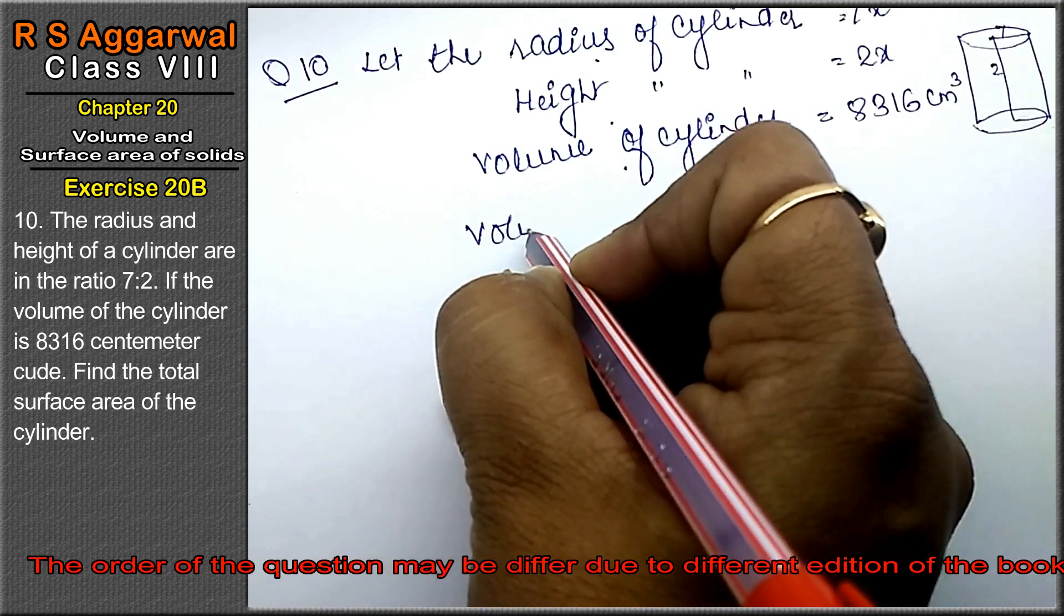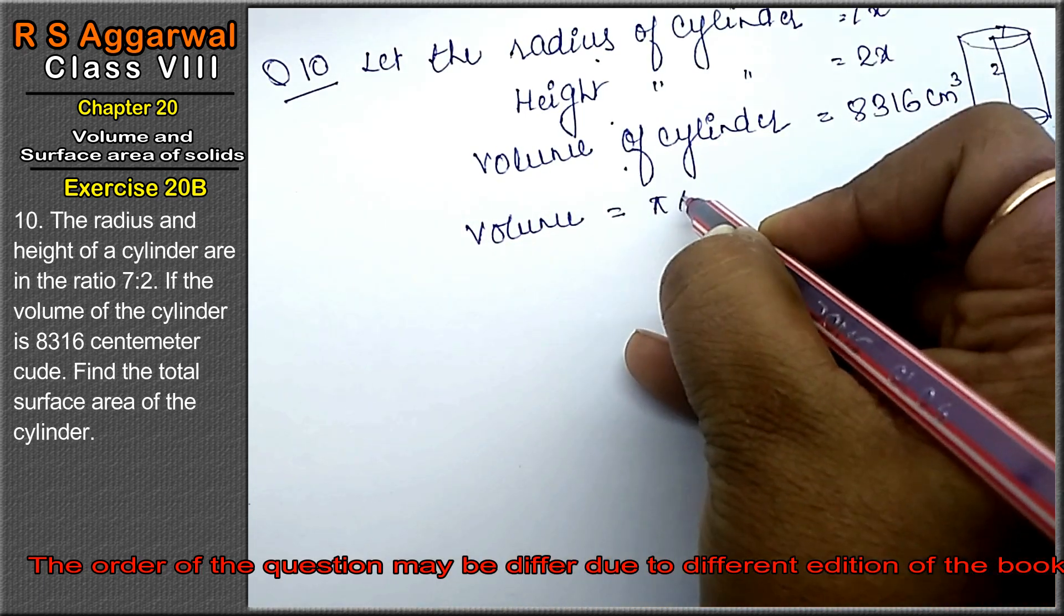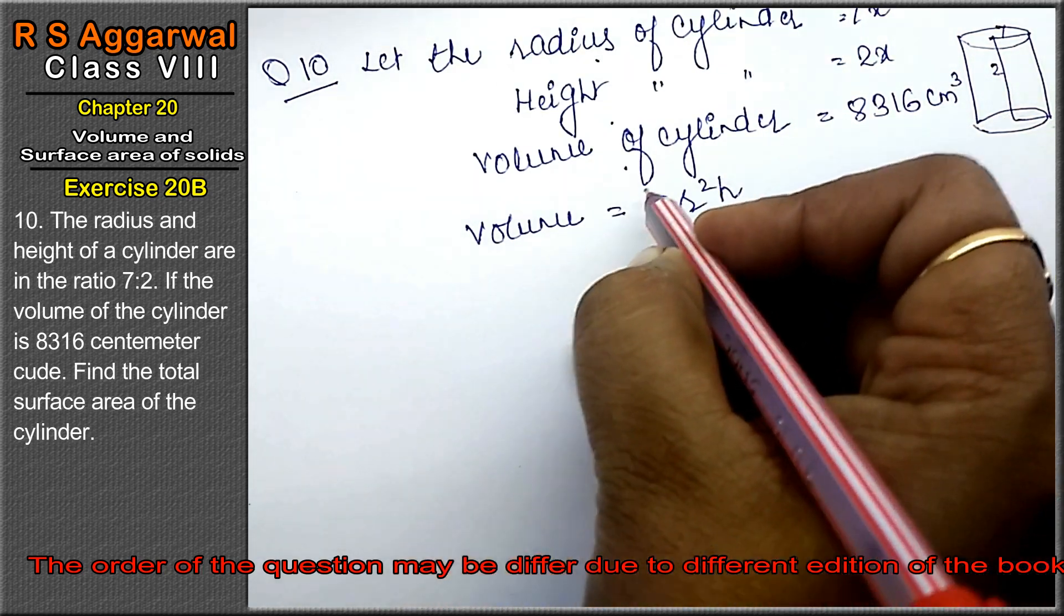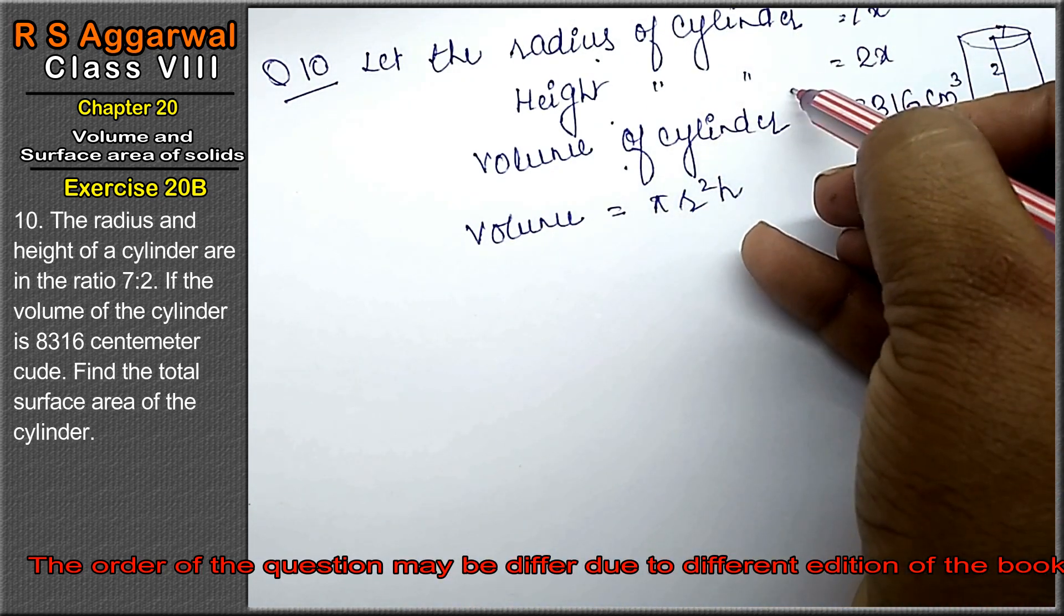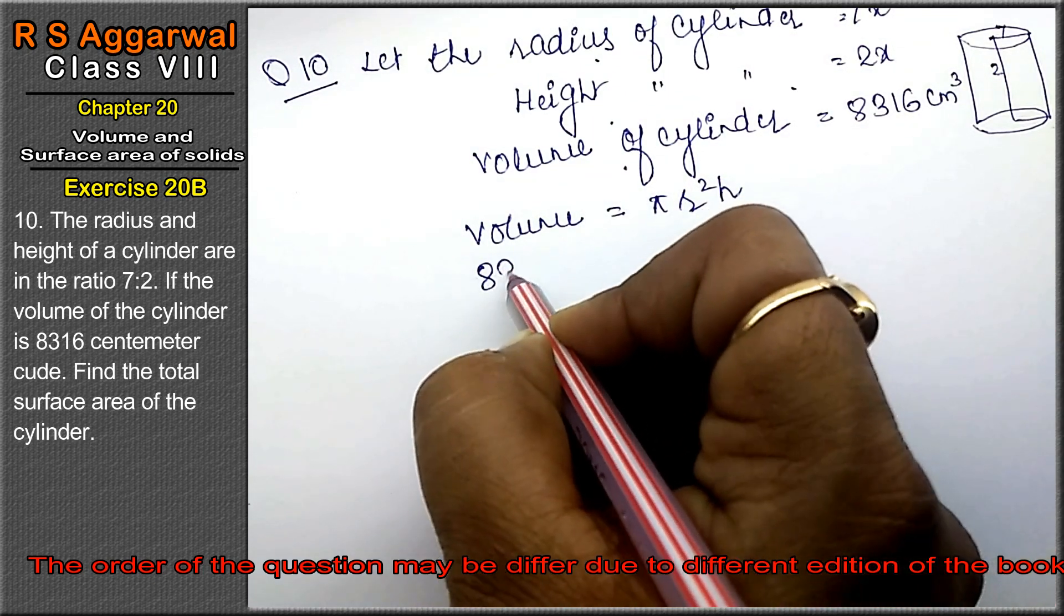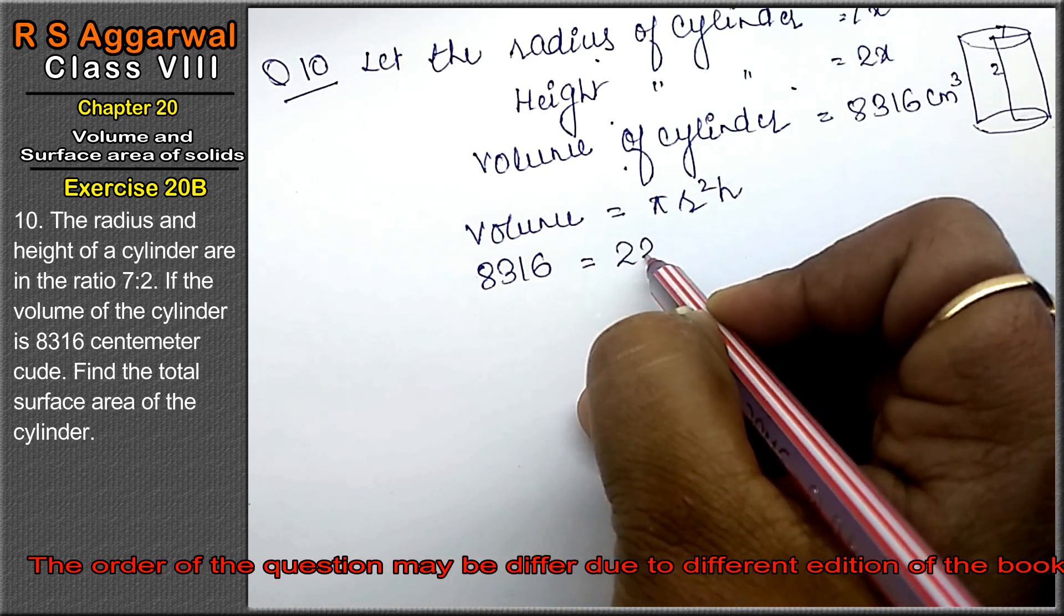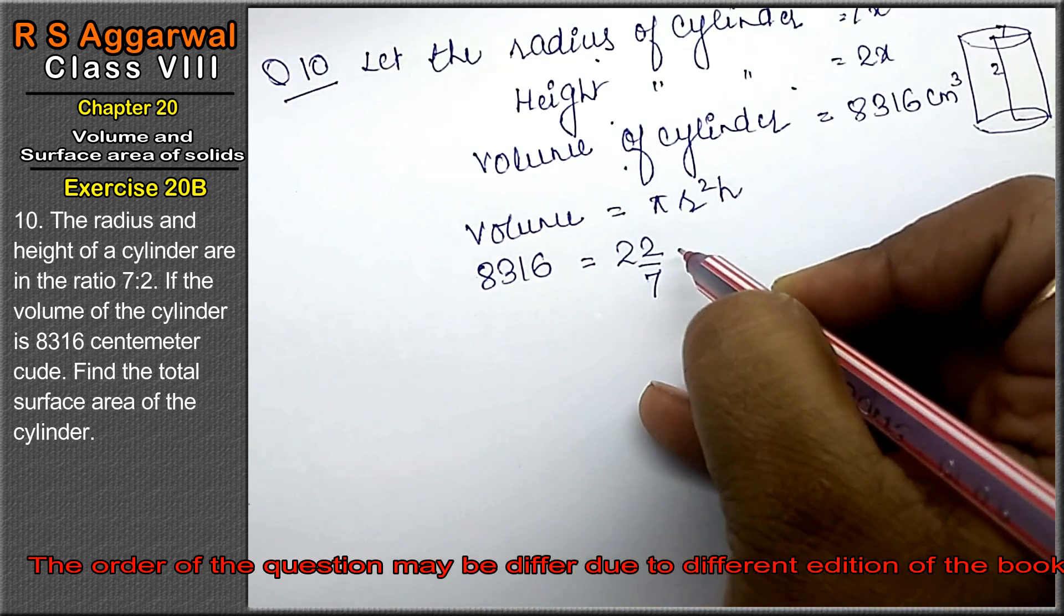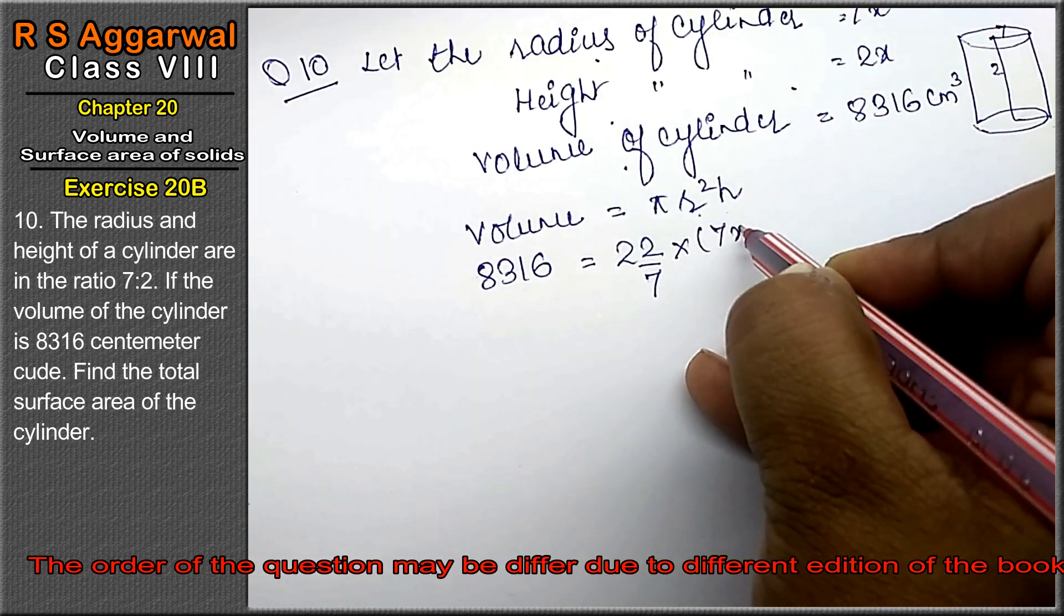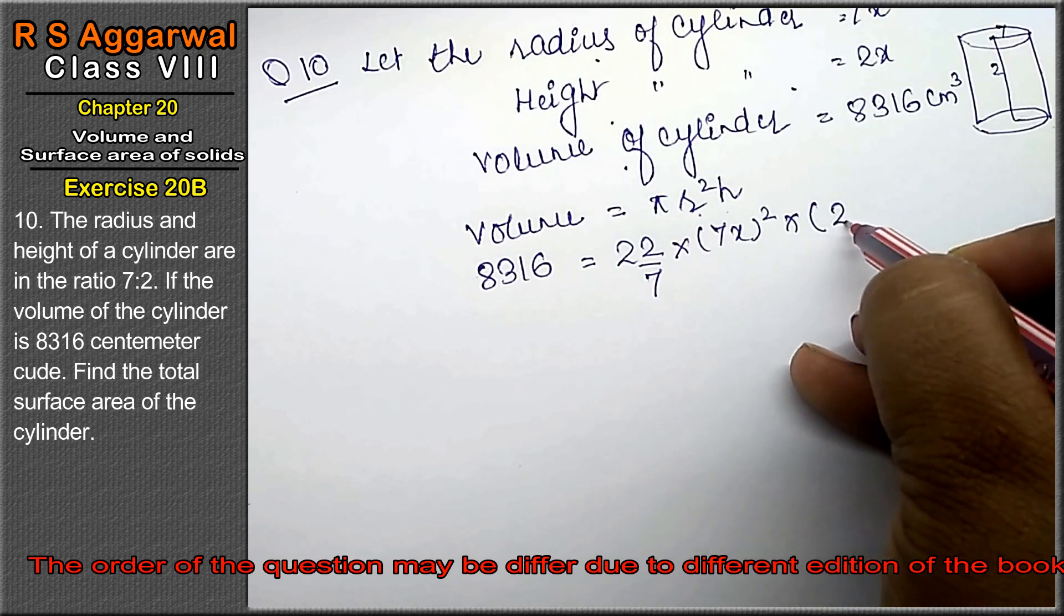So we know that the formula is volume equals to π r² h. The value of our volume is 8316 equals to π. Pi value is 22/7. R squared, r is 7x, that means 7x whole squared. Height is 2x, right friends?